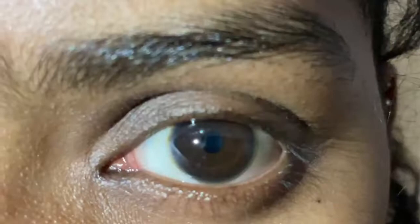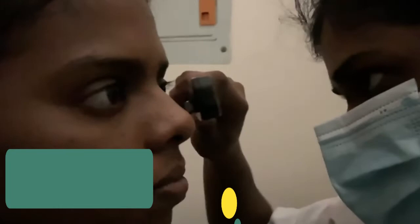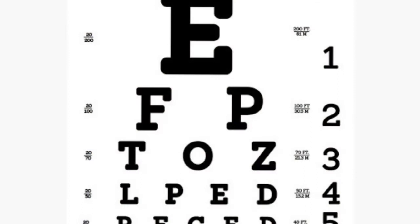Also check for red reflex. This is done by using an ophthalmoscope to shine the light in a patient's eyes and visualize the red reflex in both eyes. The wrong color in this reflex can indicate serious conditions.